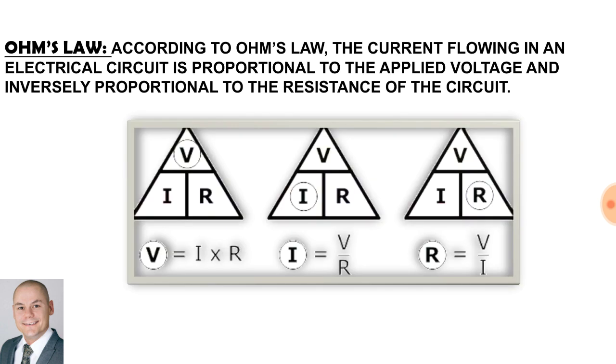The definition for Ohm's law. According to Ohm's law, the current flowing in an electrical circuit is proportional to the applied voltage and inversely proportional to the resistance of the circuit.